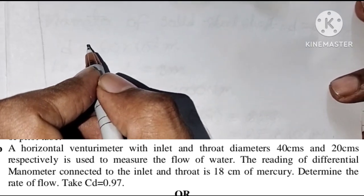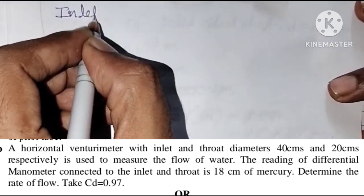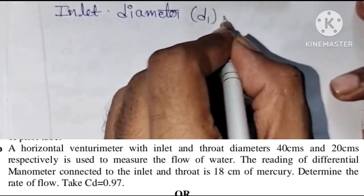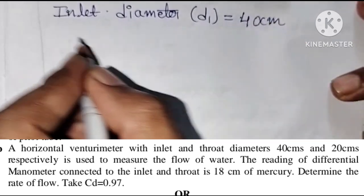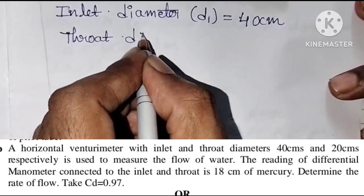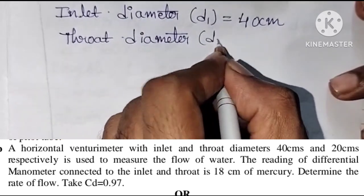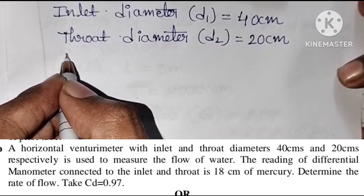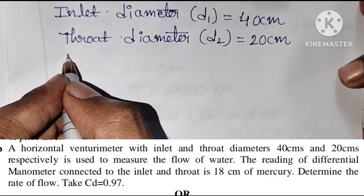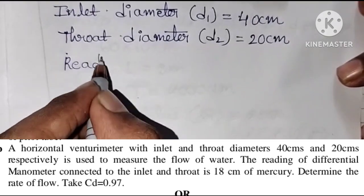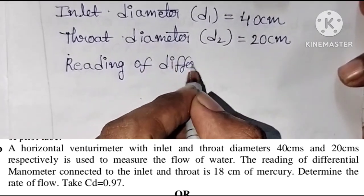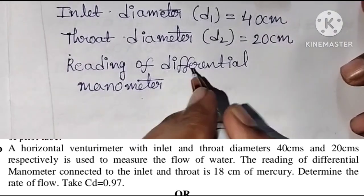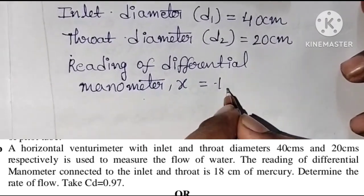We are using a horizontal venturimeter. Let us note down the given data. Inlet diameter D1 is equal to 40 cm, and throat diameter D2 is equal to 20 cm. The reading of the differential manometer, generally denoted by X, is given as X equal to 18 cm of mercury.